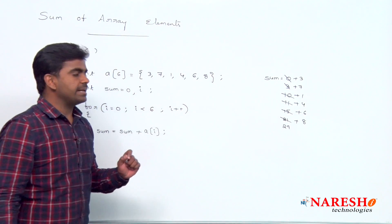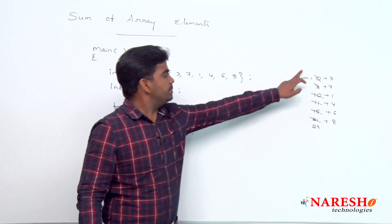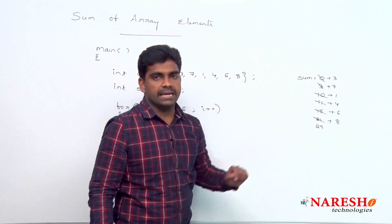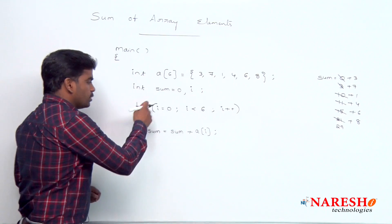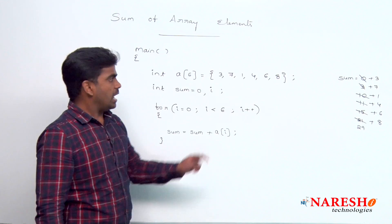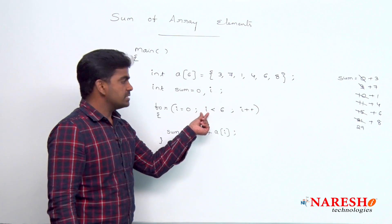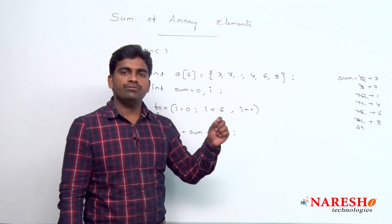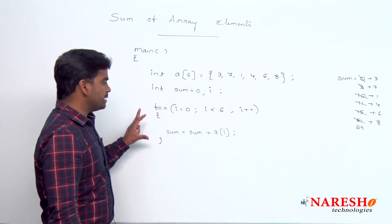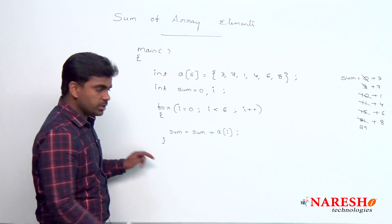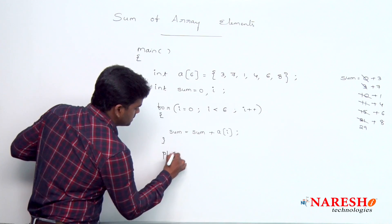So that is the final sum after adding the elements 3, 7, 1, 4, 6, 8. Once the for loop execution is completed after 6 iterations, next i value becomes 6. 6 is less than 6, condition false. Then that loop gets terminated.